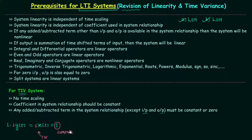Now we check whether the system is linear. According to the third property, if any added or subtracted term other than input and output is present in the system relationship, the system is non-linear. Here we have the constant term 5, so according to this property the system is non-linear. Therefore the system is time invariant but non-linear, and it is not an LTI system.